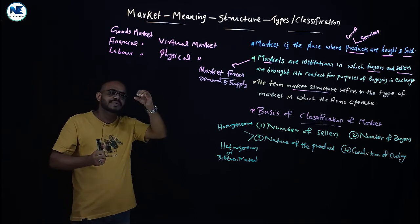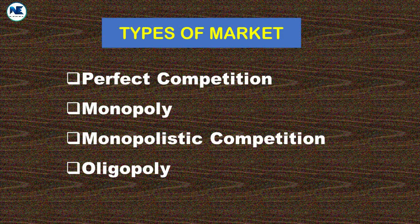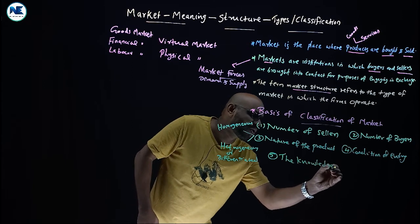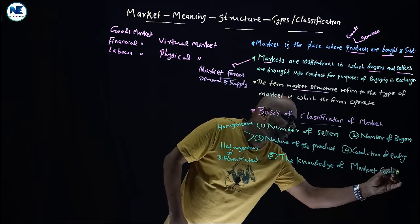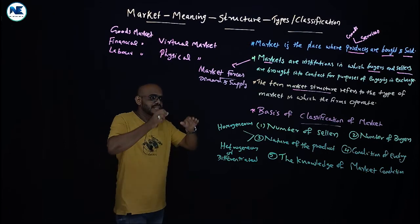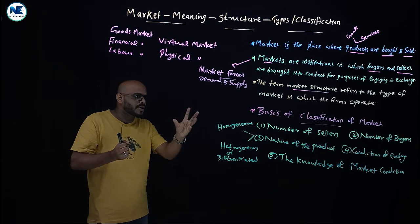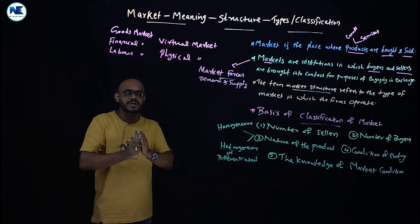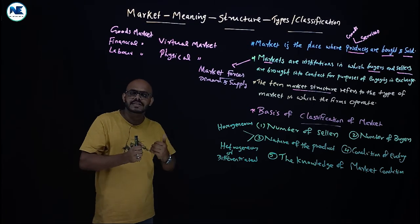Number five: knowledge of market conditions. In perfect competition, there is perfect knowledge. So the five basis for classifying the market are: number of sellers, number of buyers, nature of the product, condition of entry, and knowledge of market conditions. In the coming videos, we will discuss all these points in detail.